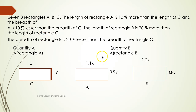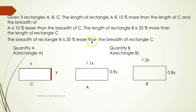Given three rectangles A, B, and C: the length of rectangle A is 10% more than the length of C, and the breadth of A is 10% less than the breadth of C. The length of rectangle B is 20% more than the length of C, and the breadth of B is 20% less than the breadth of C. We need to compare quantity A, the area of rectangle A, and quantity B, the area of rectangle B.